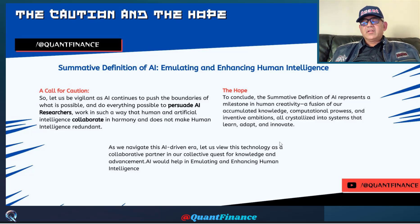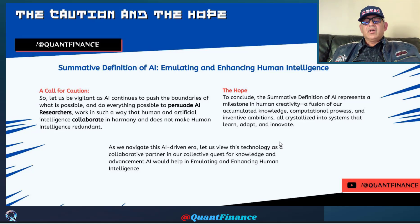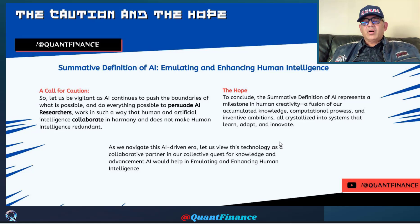Rather, we will work together — there will be a fusion of our accumulated knowledge, our computational powers, and our inventive ambitions with that of AI. We will learn, we will adapt, and we will innovate together with AI. Human intelligence working together with AI will help us find solutions to our problems, such as cancer treatment and all those things that need to be invented and discovered for the betterment of humanity.